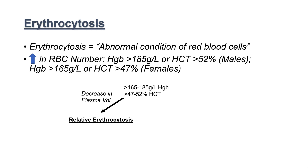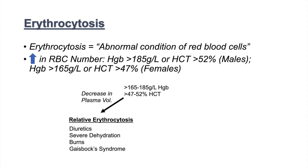In relative erythrocytosis, when we take the sample it is too concentrated because we've lost some plasma volume, meaning hemoglobin and hematocrit levels appear high due to decreased plasma volume. Causes of decreased plasma volume include diuretics, severe dehydration, burns, and Gaisbock's syndrome. These can all lead to relative erythrocytosis and can be managed by restoring plasma volume.